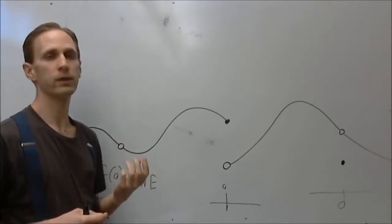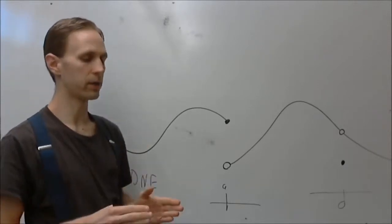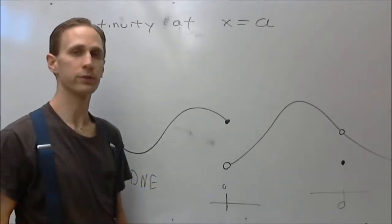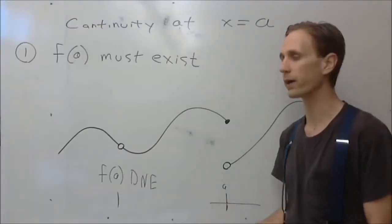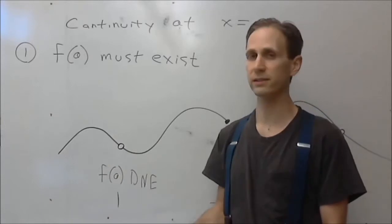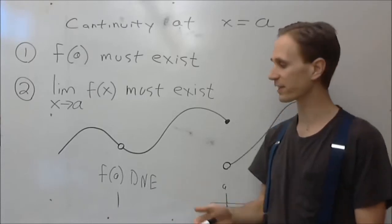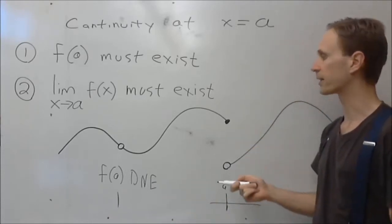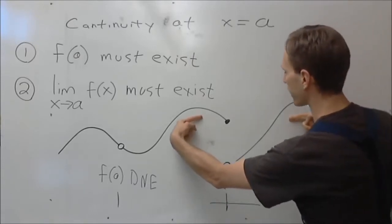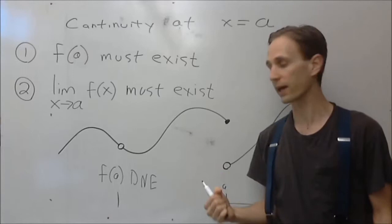We have three conditions that must be met for a function to be continuous at an x value — say x equals a. The first condition is f of a must exist; there's got to be some point there. The second condition is that the limit as x approaches a must exist. If the function from either side isn't going to the same value, then the function is discontinuous at that x value.